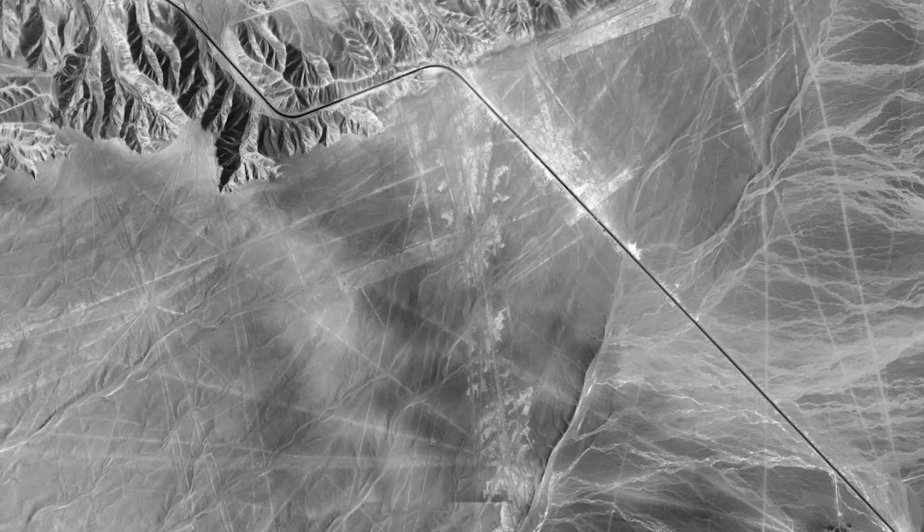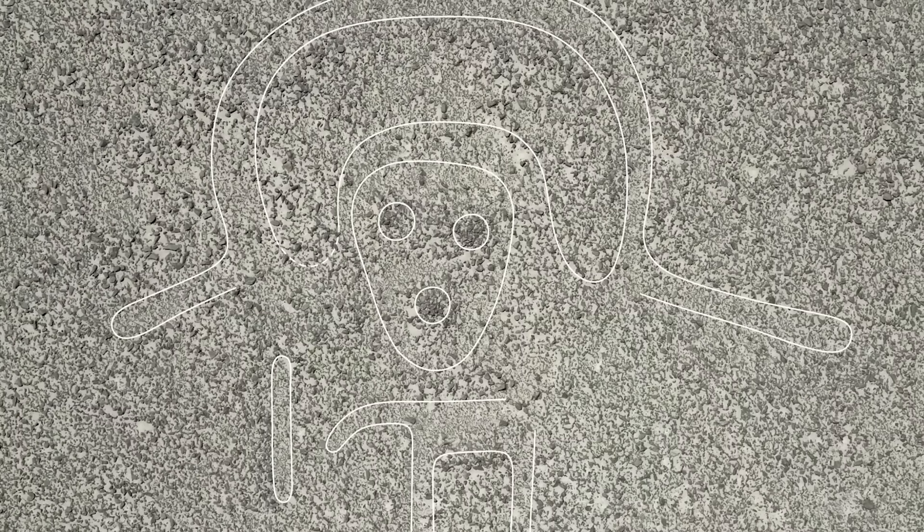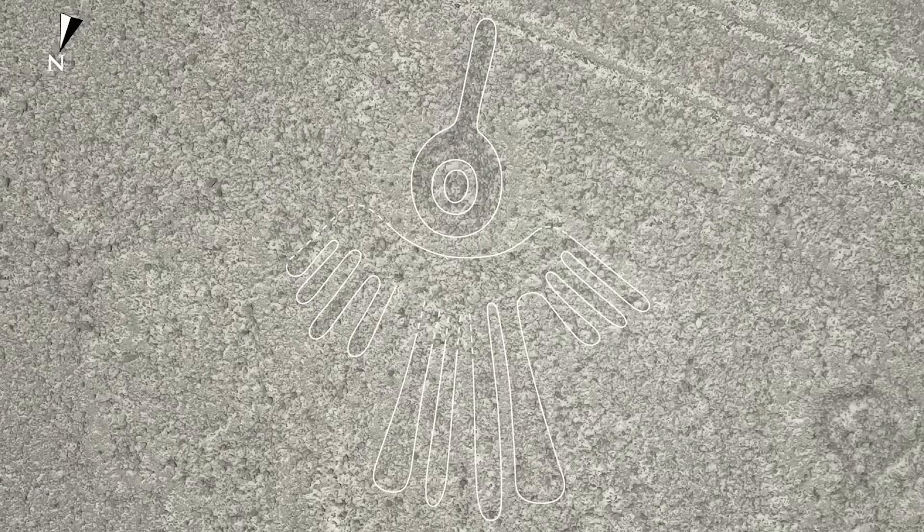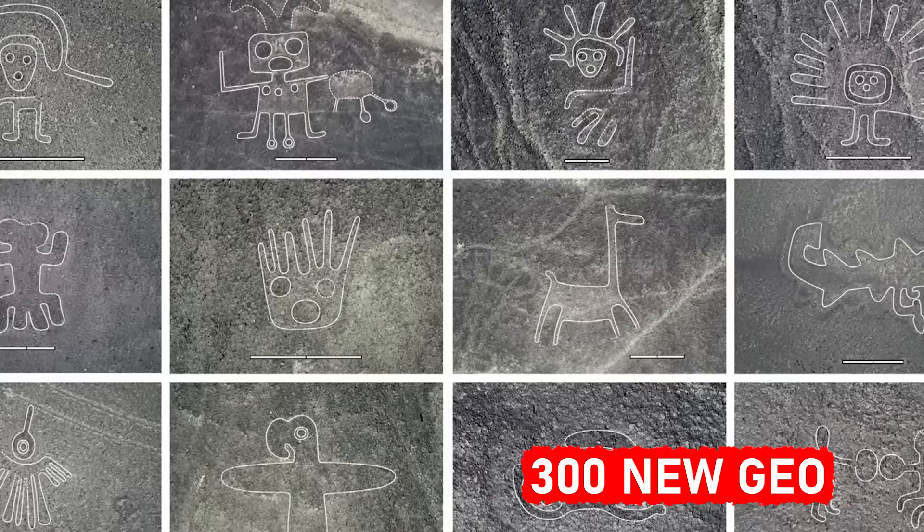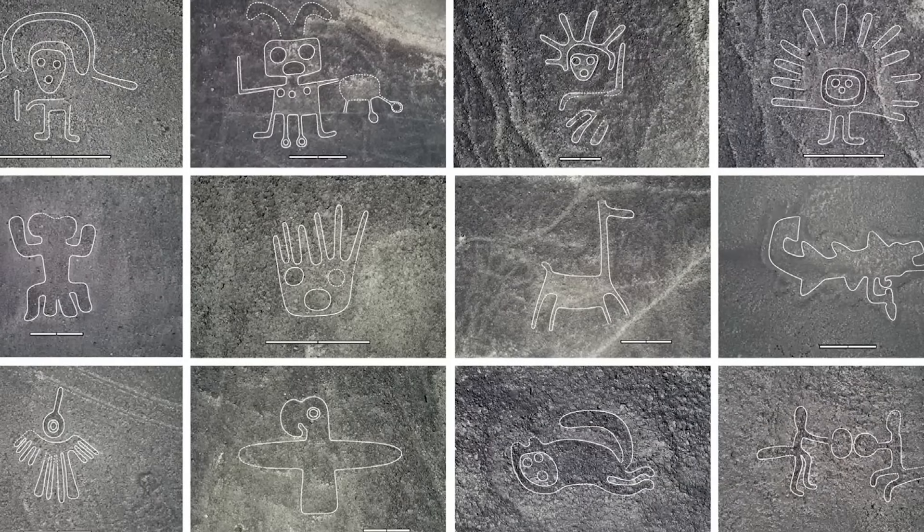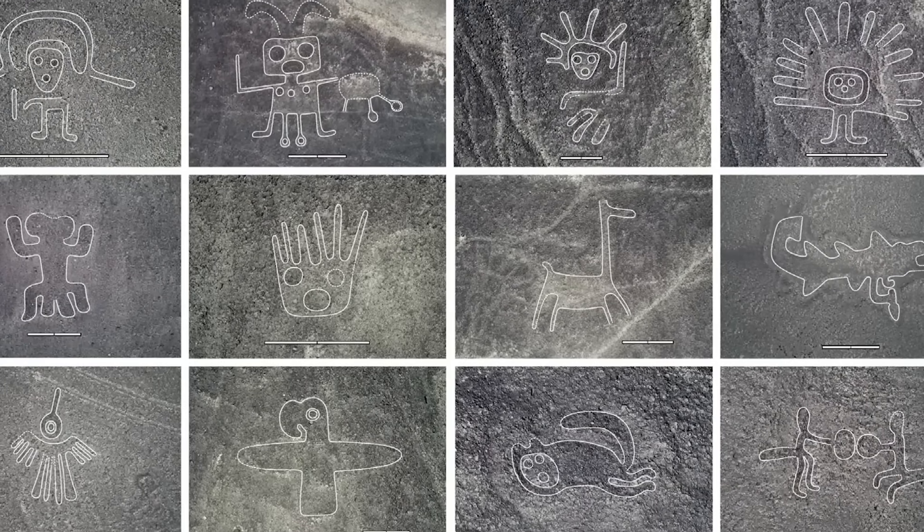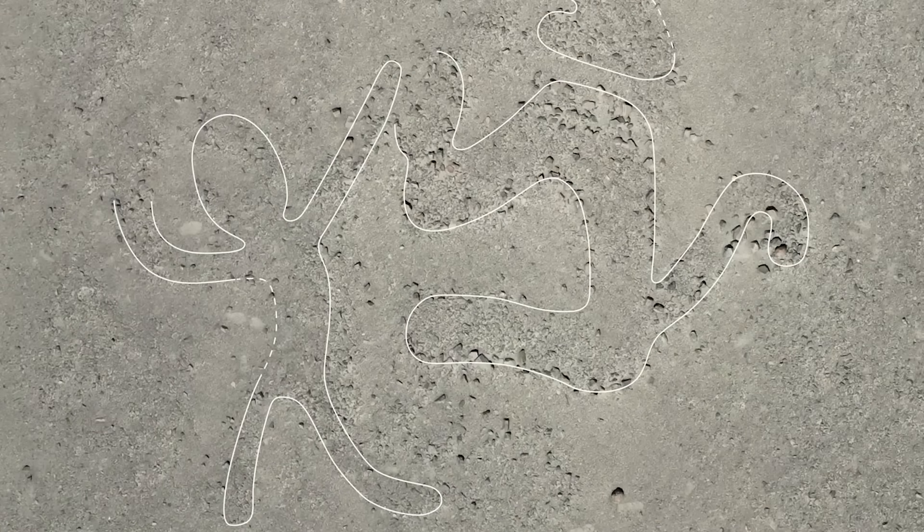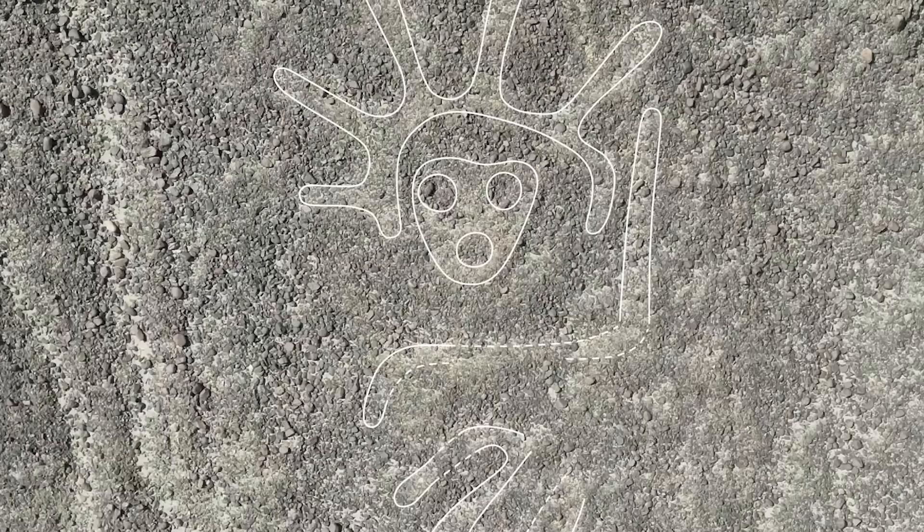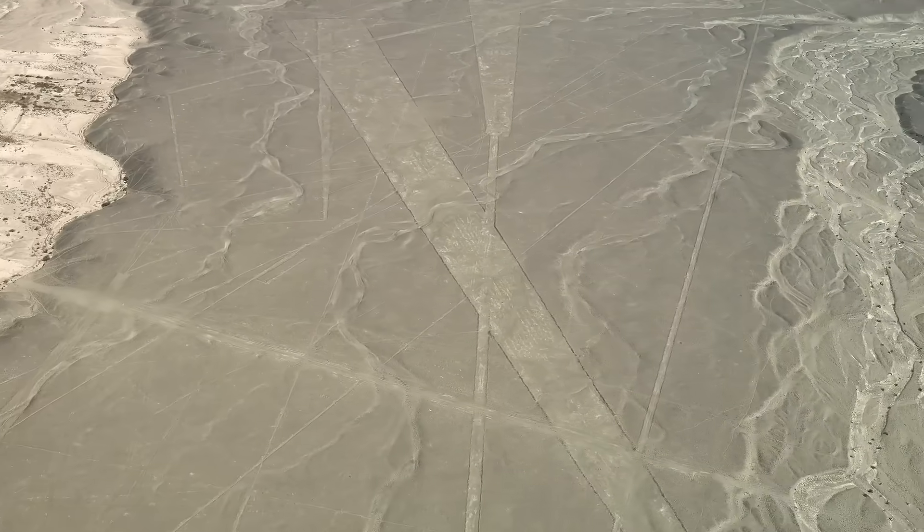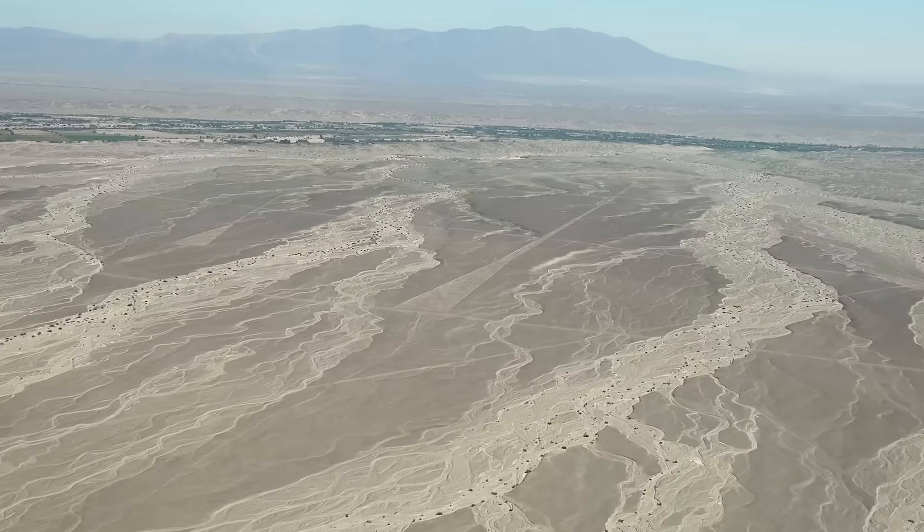The system identified over 300 new geoglyphs, almost doubling the number that were previously known. Some showed humans, birds, and mysterious hybrid creatures that had faded so much they were invisible to the human eye. The findings suggest these figures weren't random art, but may have marked ancient pilgrimage routes or ceremonial paths.